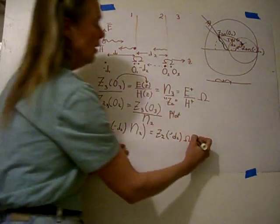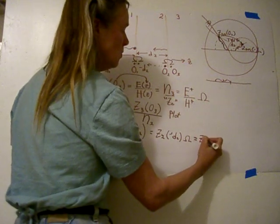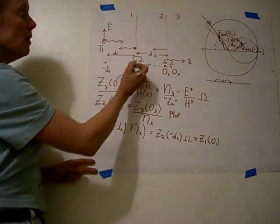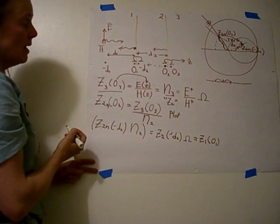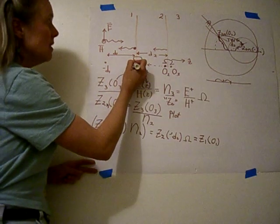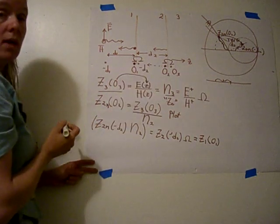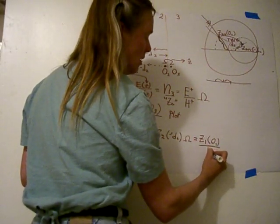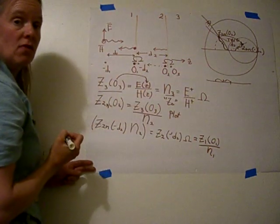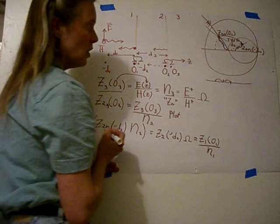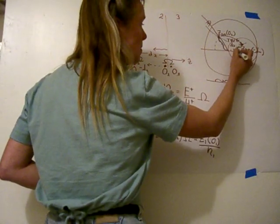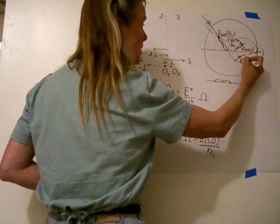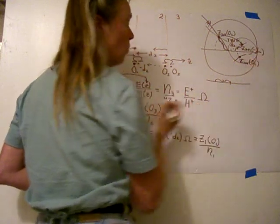Since ohms cross the boundary, z2 at minus D2 is equal to z1 at O1. Now if we would like to find the reflection coefficient, we can plot this on the Smith chart. So we take z1 at O1 and normalize it — this time dividing by eta1 — and plot that on the Smith chart. Let's suppose that it gives us a real and imaginary part right here, so this would be z1 normalized at O1.